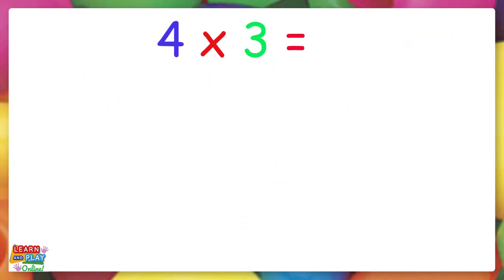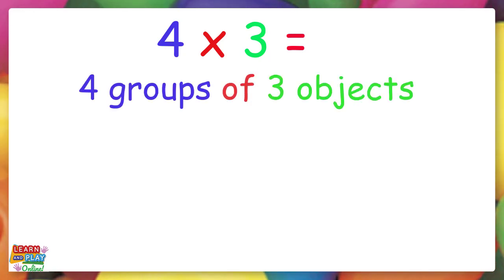Let's start with a question that says 4 times 3. That means we need to make 4 groups of 3 objects. Let's make 4 groups first.